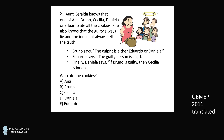Who ate the cookies? A. Ana, B. Bruno, C. Cecilia, D. Daniela, or E. Eduardo. At first glance, the puzzle seems impossible. There are five suspects, but we only have statements from three of the people. Furthermore, any of the statements could be a lie because one of the children is guilty. But even if we knew any of these statements were true, no one is directly accusing someone else. So even if we know a statement is true, we can't directly figure out who ate the cookies. So how do we figure it out?